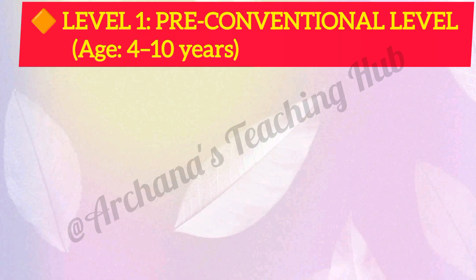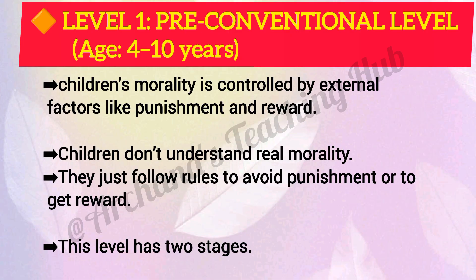Level 1: Pre-conventional level. Age 4 to 11 years. At this level, children's morality is controlled by external factors like punishment and reward. Children don't understand real morality — they just follow rules to avoid punishment or to get a reward. This level has two stages.